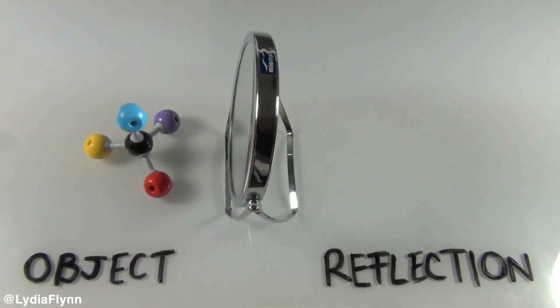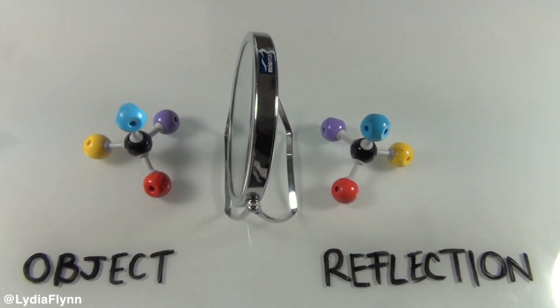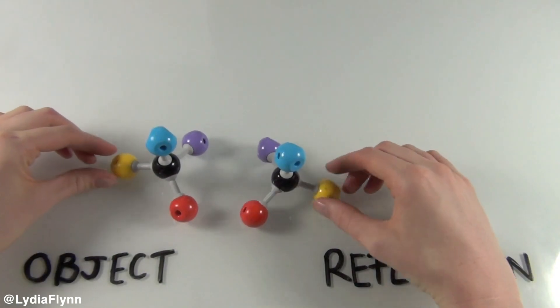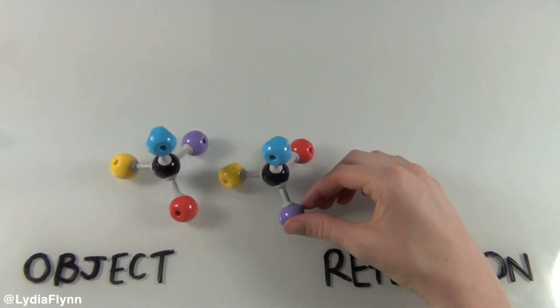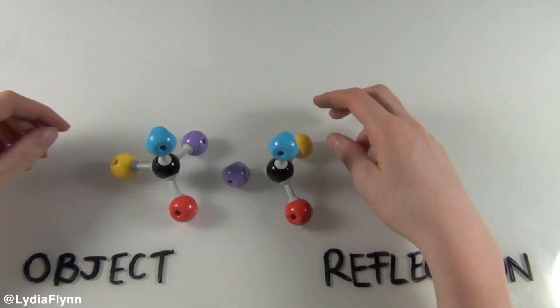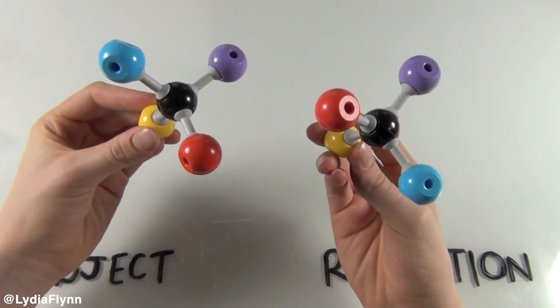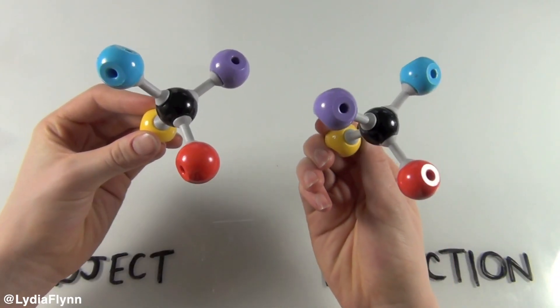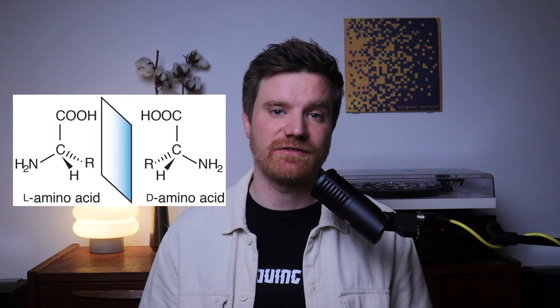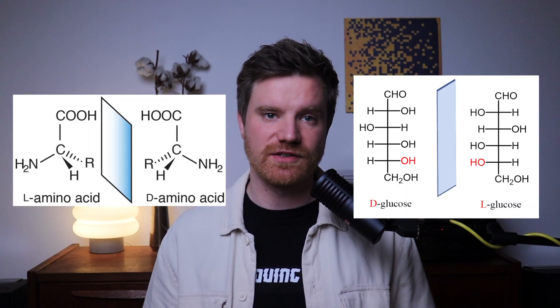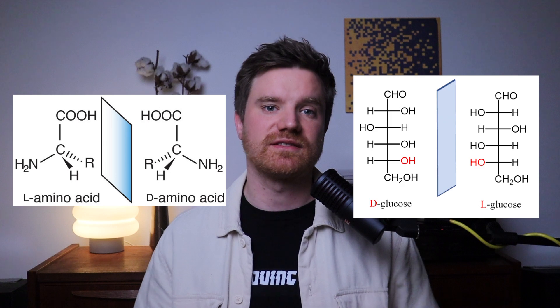In molecules, chirality works the same way as the example of your left and right hand. Some molecules, especially in living organisms, come in two versions that are like left and right hands — we even call these different versions left-handed and right-handed. In biology, most organisms use left-handed amino acids and right-handed sugars, and this handedness is super important because the way molecules interact with one another depends on their shape.